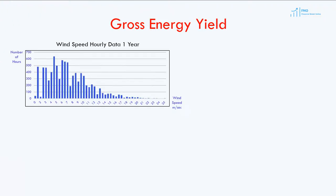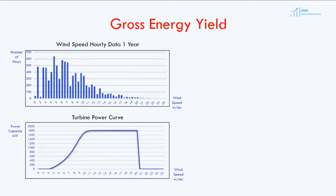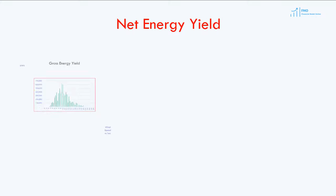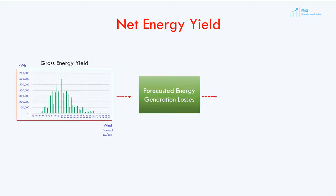The next step is to combine wind pattern data and wind turbine S-curves to model forecast energy output over time. This is typically done using Monte Carlo simulation, which yields a gross generation of the project. Once the gross generation is available, the numbers are adjusted for losses such as downtime for maintenance, and the Monte Carlo simulation is rerun in order to arrive at the net energy generation.